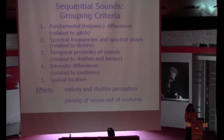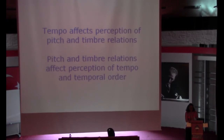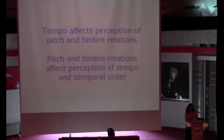Auditory scene analysis and basic work with fundamental dimensions of sound — pitch, timbre, loudness, and duration — can influence how we perceive rhythm and timing in music. Among the criteria that have been codified: fundamental frequency differences related to pitch, spectral centroid related to timbre, the proximity of sounds, intensity differences, and spatial location differences. Tempo affects the perception of pitch and timbre relations, and pitch and timbre relations affect the perception of tempo and temporal order — in some examples you cannot even tell what came first.